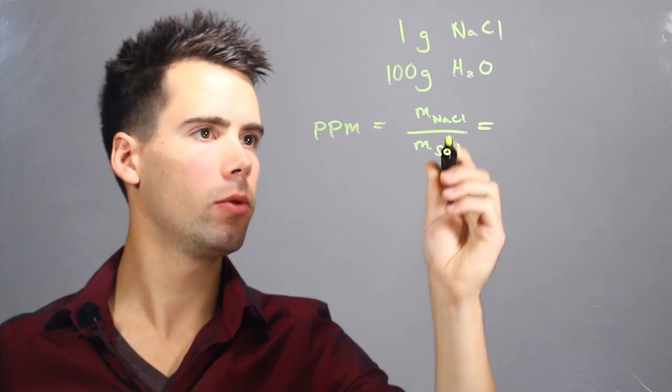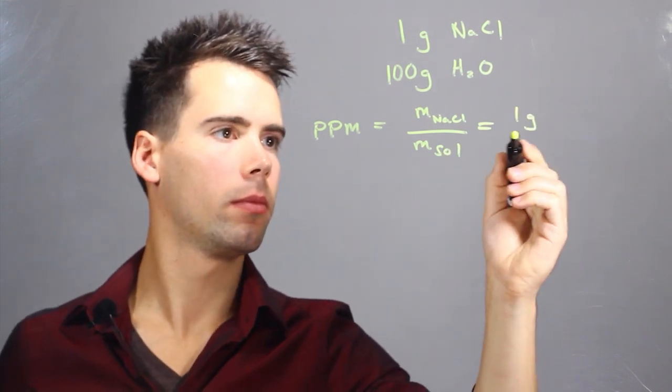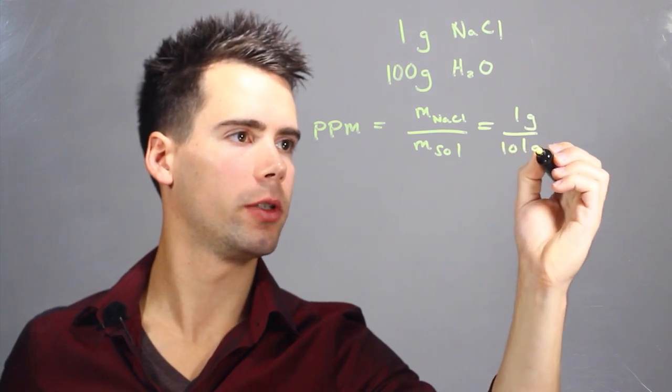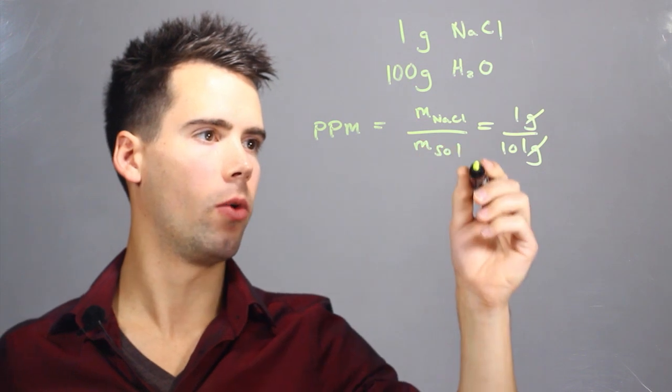We find that it's equal to one gram over 101 grams. Now the one thing I left out is you're actually multiplying it by one million.